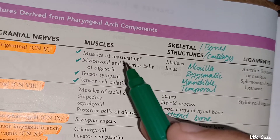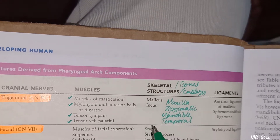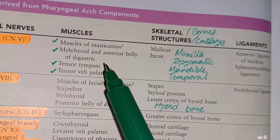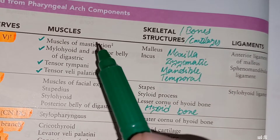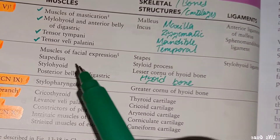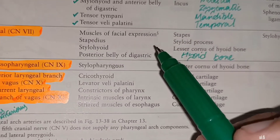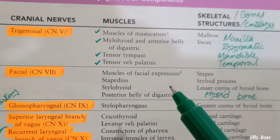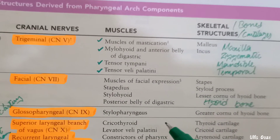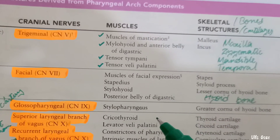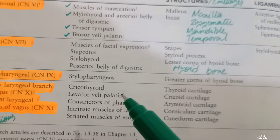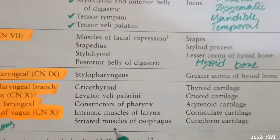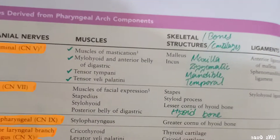From the first pharyngeal arch: muscles include the belly of digastric, tensor tympani, and tensor veli palatini. The second pharyngeal arch gives rise to muscles of facial expression — buccinator, orbicularis oris, frontalis, platysma, and orbicularis oculi. The third pharyngeal arch gives the stylopharyngeus muscle. The fourth pharyngeal arch gives thyroarytenoid, levator veli palatini, constrictors of the pharynx, muscles of the larynx, and striated muscles of the esophagus.